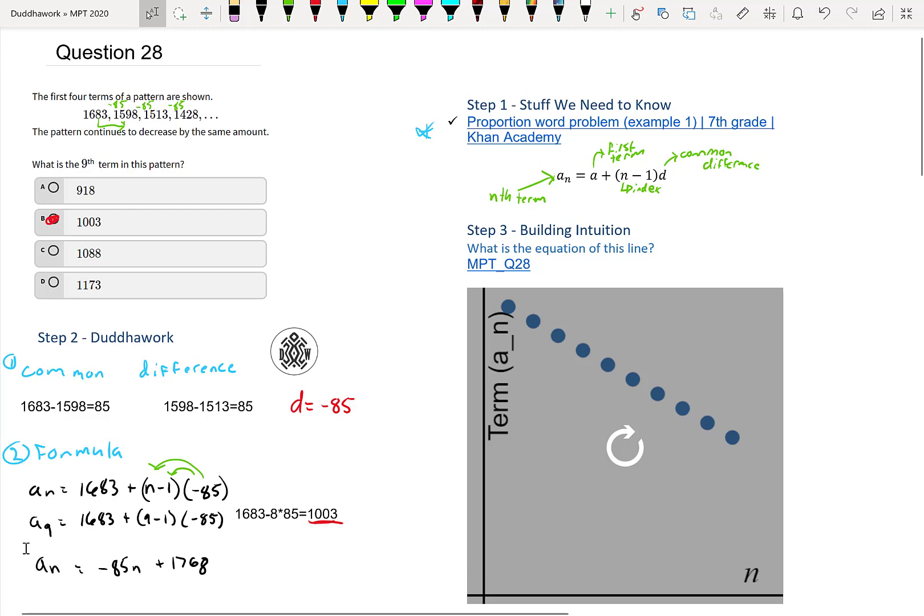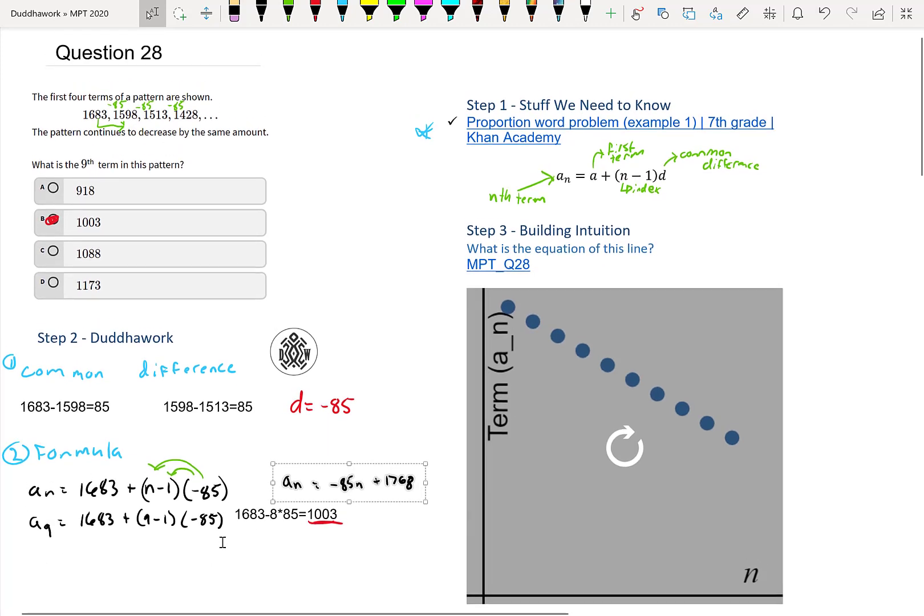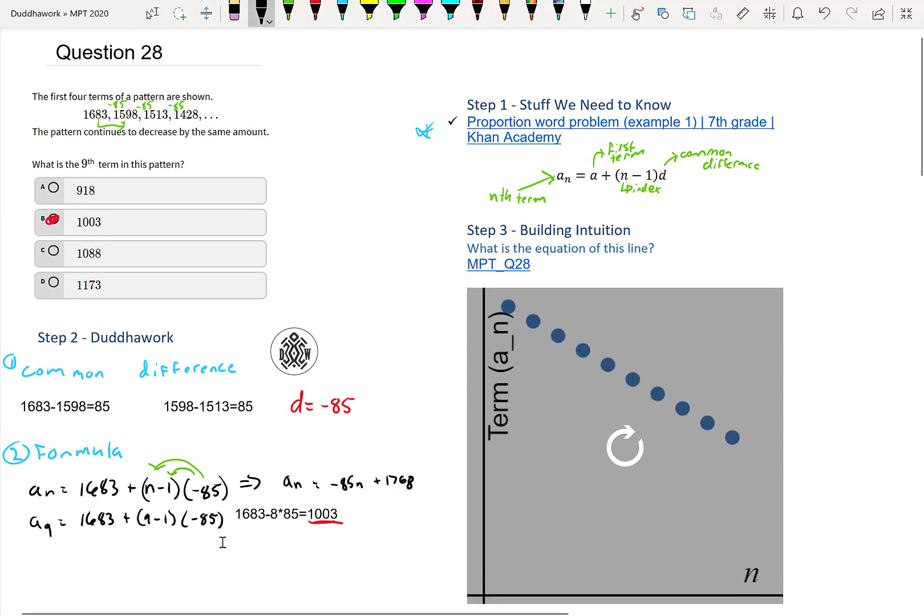Or maybe what I'll do is I'll put it here so it's obvious that it's this thing. I'll put a little arrow. So like this, it's obvious that it's this equation. Well, turns out this is in the format MX plus B. Our M is just the common difference. Our N is X. And then our B is the Y intercept.